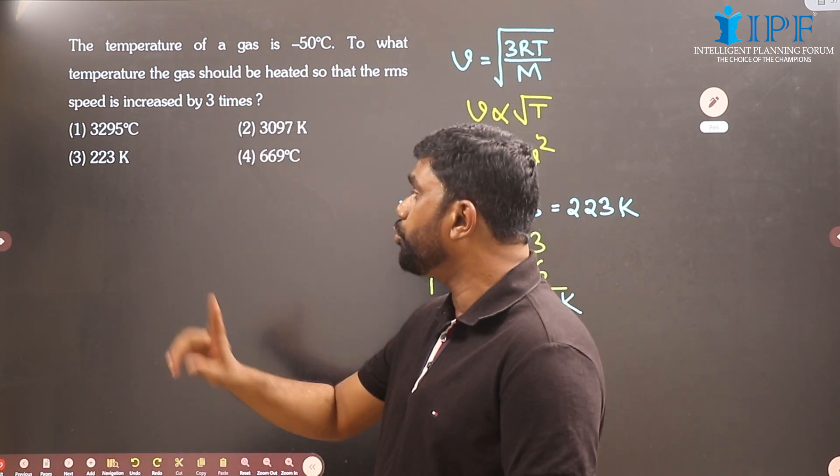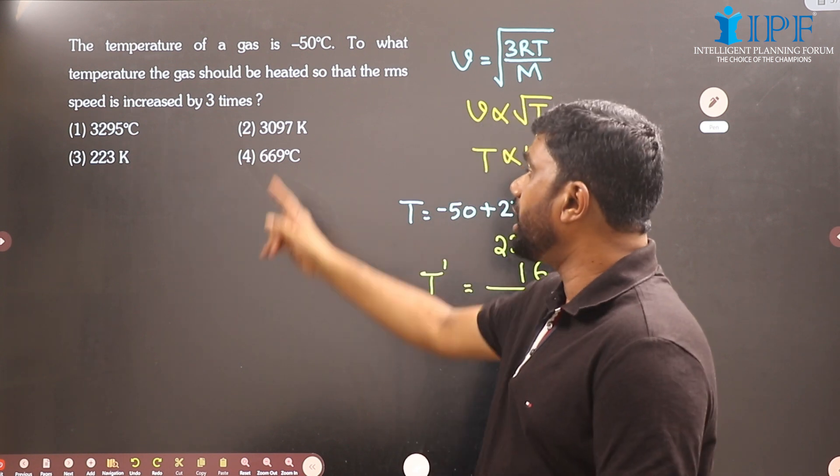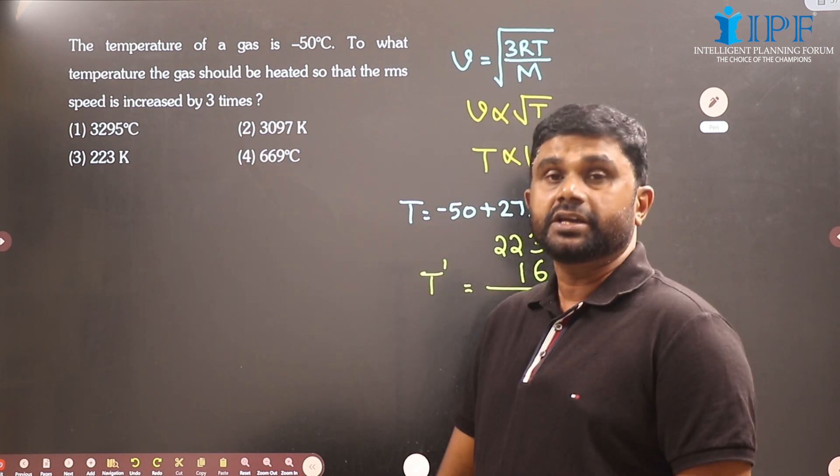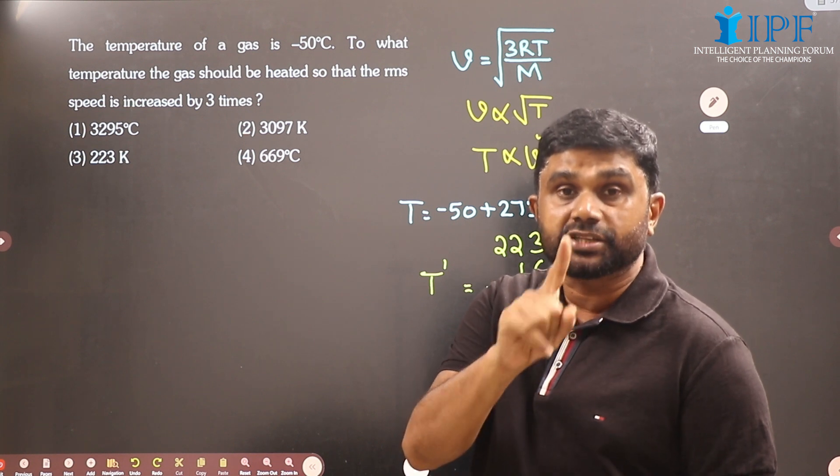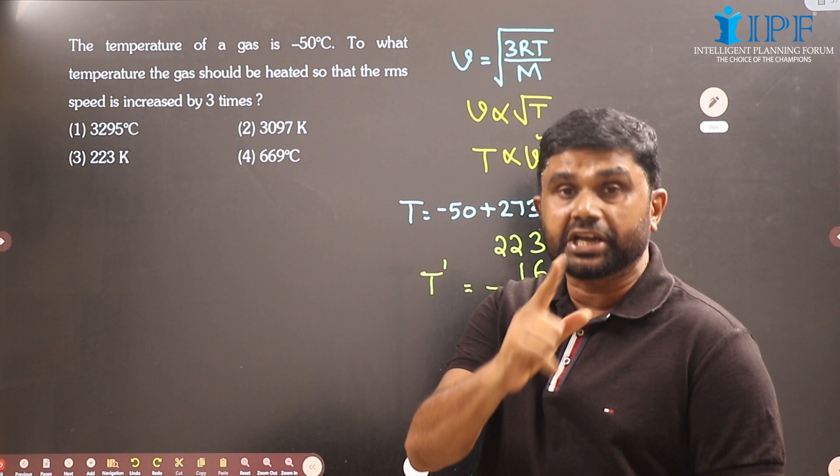We have only two options in Kelvin. One is 223 - there is no 8 at the unit place. The other is 3097 - again there is no 8 at the unit place. Now the next possibility is the temperature in degree Celsius.